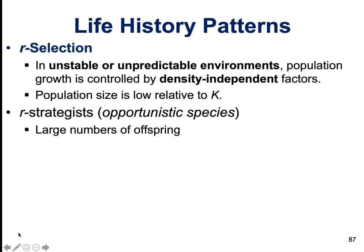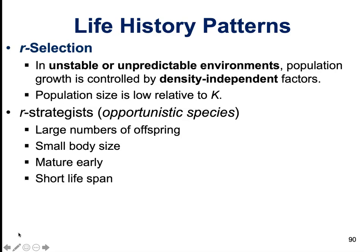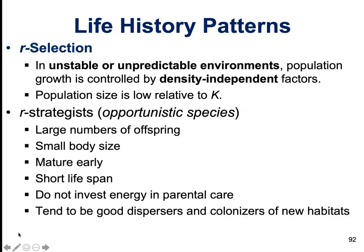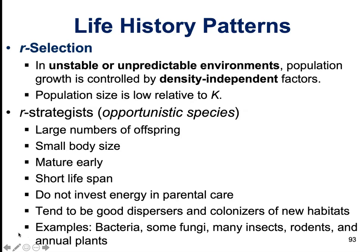R-strategists tend to have incredibly large numbers of offspring and tend to be very small in body size. They mature early, have a short lifespan, and do not invest much time or energy into parental care. They also tend to be very good dispersers and colonizers of new habitats. Great examples include bacteria, fungi, insects, rodents, and annual plants.